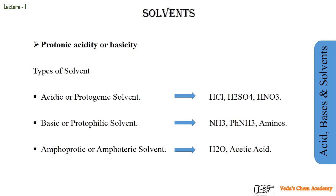The next type is the amphoteric or amphiprotic solvents. Those solvents that can act as both an acid and a base are called amphoteric or amphiprotic — they have the tendency to both donate and accept a proton. These are the three main types of solvents classified under protonic acidity or basicity.